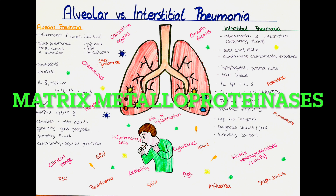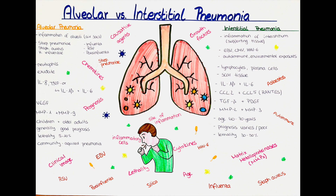Which are the important matrix metalloproteinases? MMPs are enzymes that break down collagen, the main protein in the extracellular matrix. MMP1 and MMP9 are matrix metalloproteinases important in the destruction of alveolar walls that occurs in alveolar pneumonia, which can lead to the formation of exudate that obstructs the alveoli and makes it difficult for oxygen to diffuse into the bloodstream. MMP2 and MMP3 are MMPs important in the remodeling of the extracellular matrix that occurs in interstitial pneumonia, which can lead to the formation of scar tissue that obstructs the alveoli and impairs oxygen diffusion.